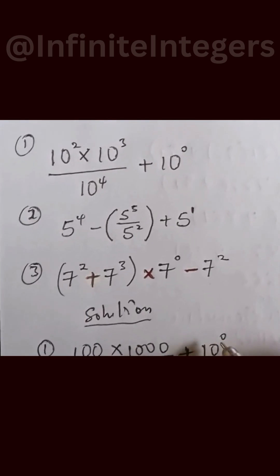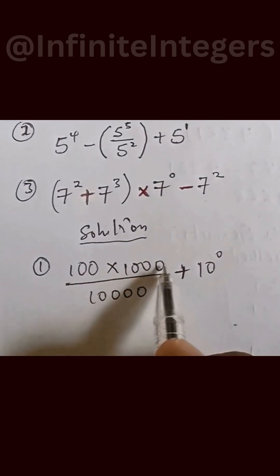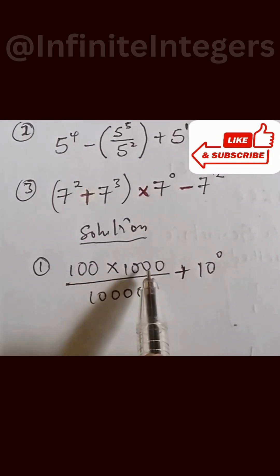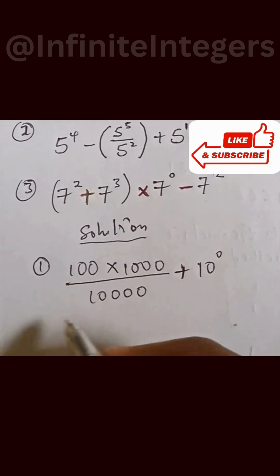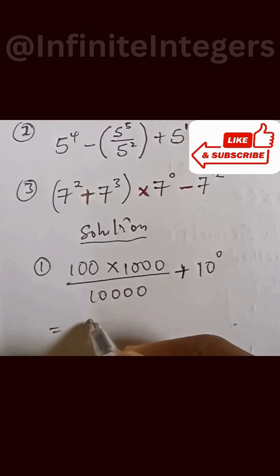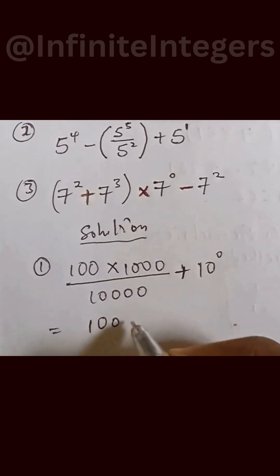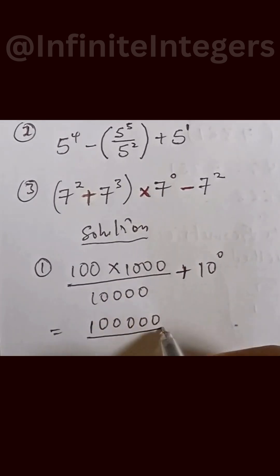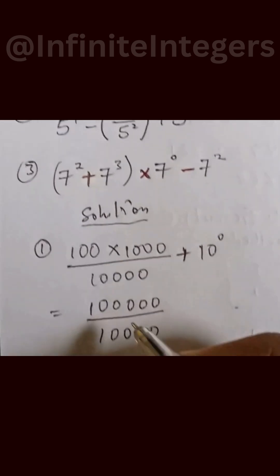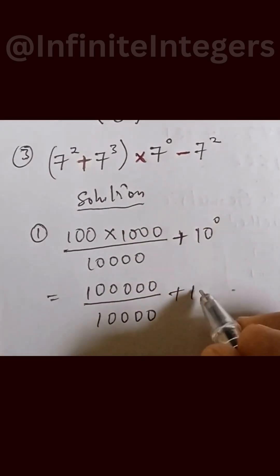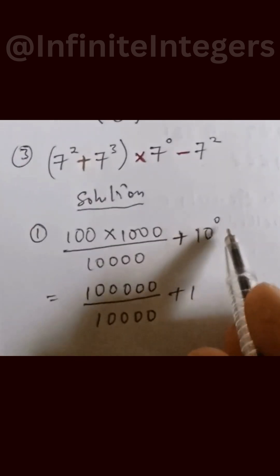With 10 to the power of zero. So the whole of the numerator, if we multiply that, will be given as 100,000 over 10,000, then plus 10 to the power of zero, which is one.